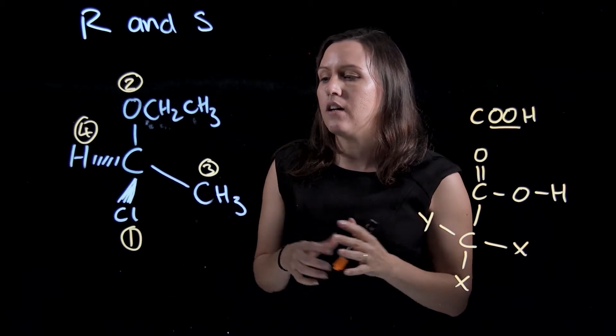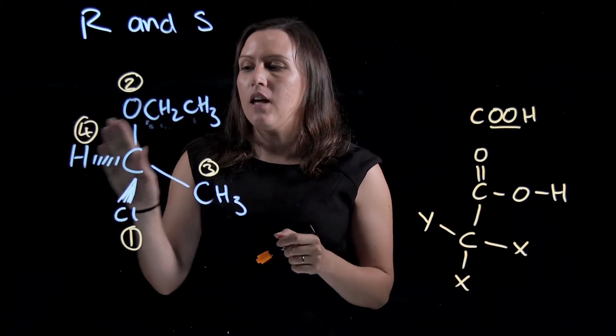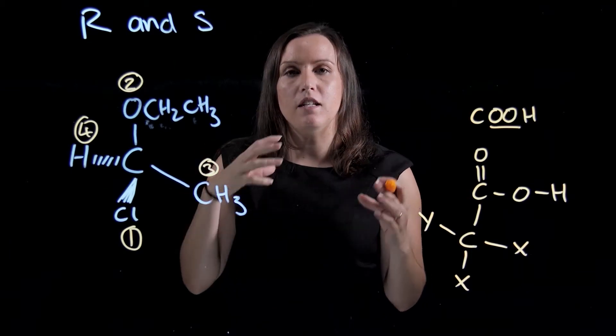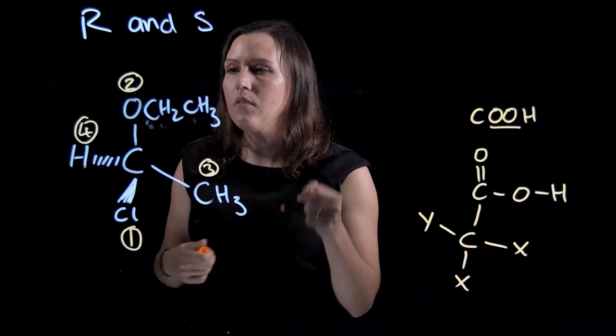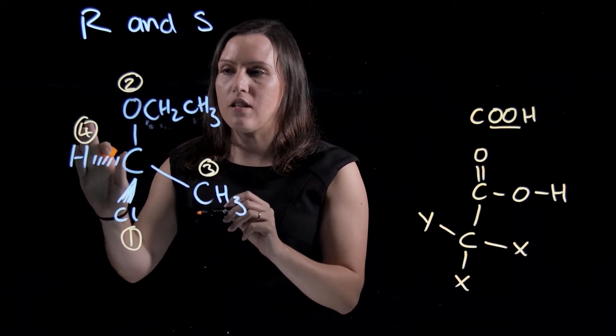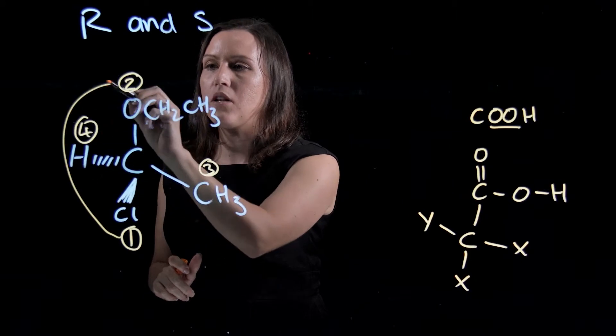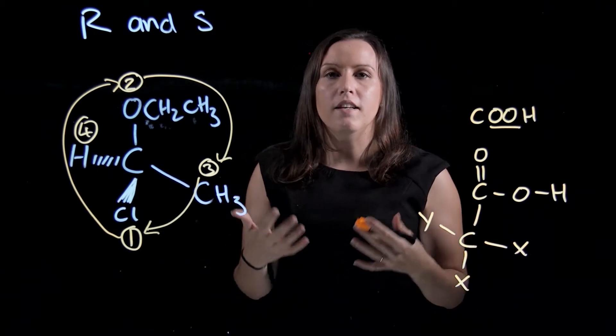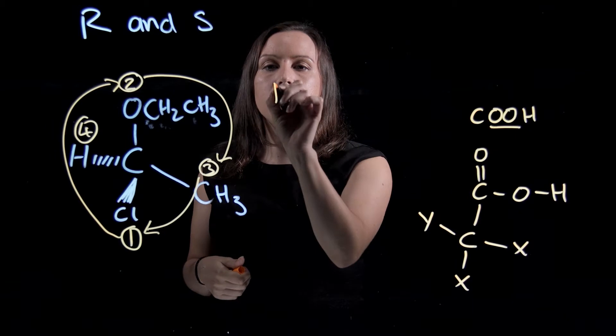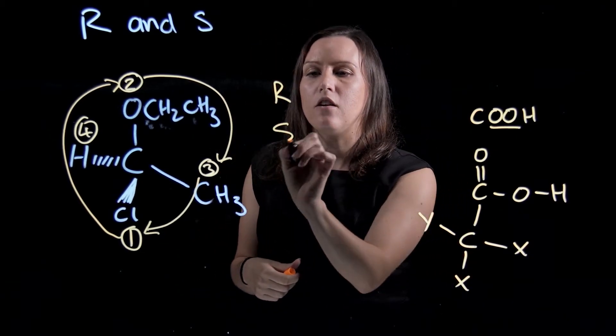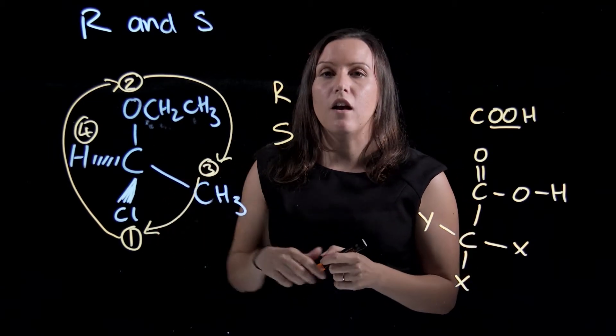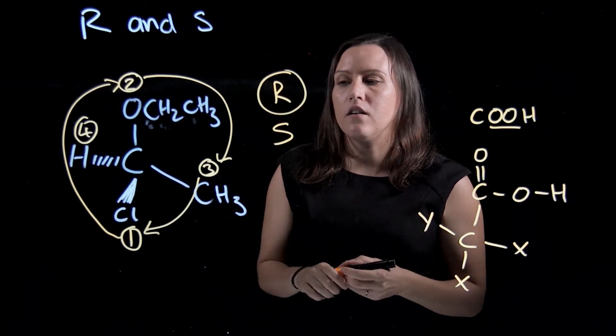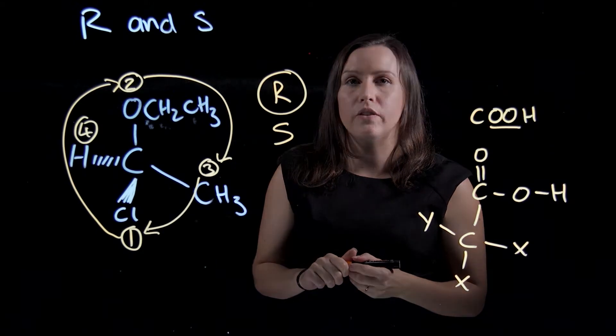Once you work out your order, you then want to make sure that number four has got the dashed line, going into the page or into the whiteboard. Sometimes you might need to rotate the molecule for this. Once hydrogen is in the background, you then go for your arrows: you connect one to two, two to three, three to one. Then you look at it and you go, is that going clockwise or anticlockwise? If it's clockwise, it would be R and if it's anticlockwise, it would be S. This one here is in a clockwise direction, so it would be an R chiral carbon in the center.